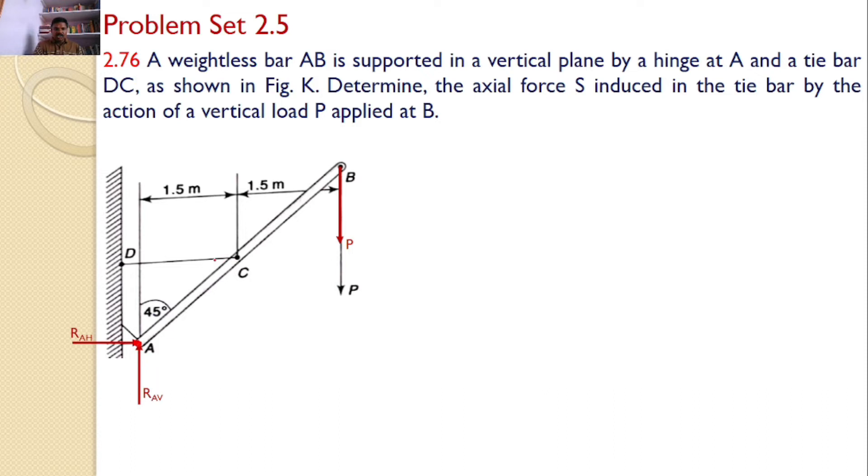So, the tie rod will introduce a force along the tie rod and it is away from the bar. Hence, this is S. Why it is away? Because we are assuming that initially the force is tensile force. If we get positive value at the end, our initial assumed direction of tensile is correct. But if we get negative, that means the magnitude is same but the force is compressive. Like that, we will conclude.